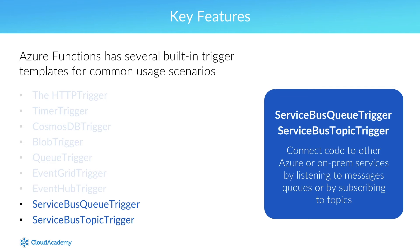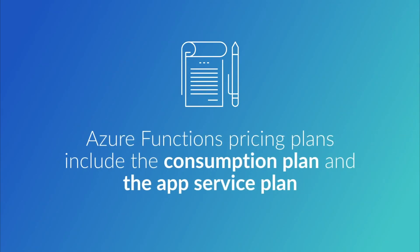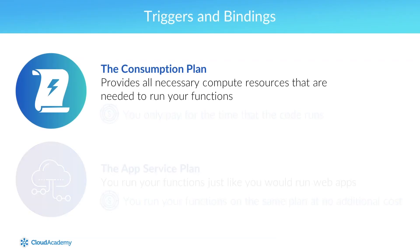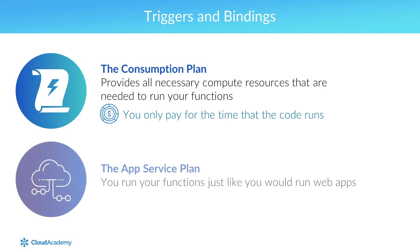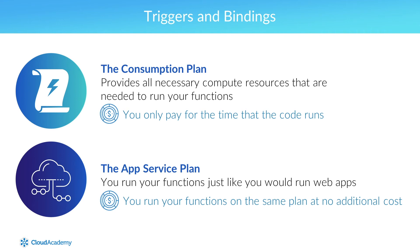Azure Functions offers two kinds of pricing plans: the consumption plan and the app service plan. The consumption plan provides all necessary compute resources needed to run your functions, with no need to be concerned with resource management — you only pay for the time that the code runs. When using the app service plan, you run your functions just like web apps. If you are already using App Service for other apps, you can run your functions on the same plan at no additional cost.